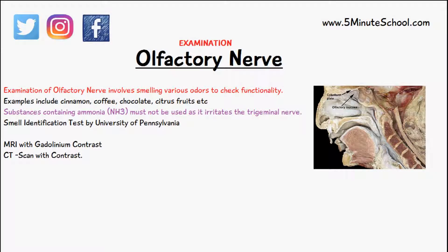Today we're talking about how the olfactory nerve is evaluated. As you might know, the olfactory nerve is to do with the sensation of smell, so obviously the examination of the olfactory nerve would involve smelling various odors to see if it's fully functional. Examples of odors that we might use include cinnamon, coffee, chocolate, or citrus fruits.